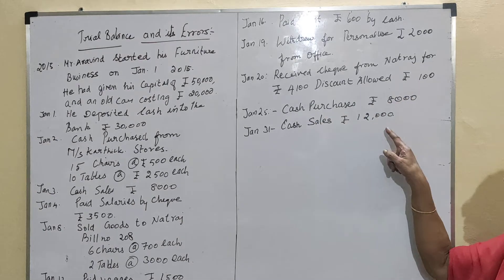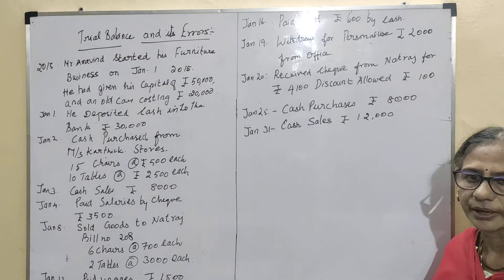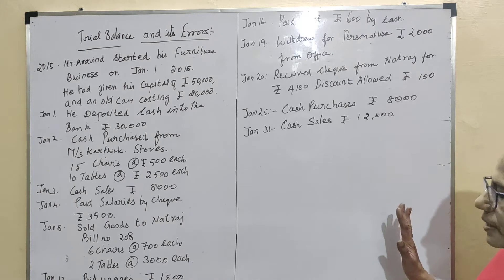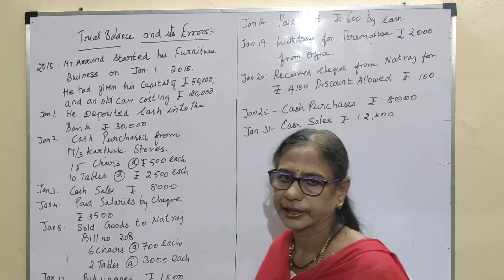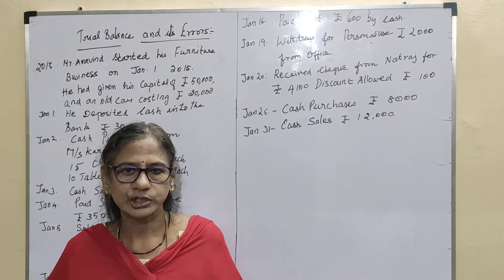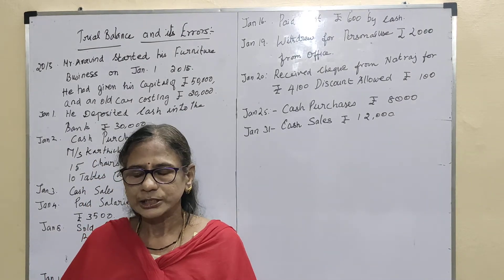Cash purchases rupees 8,000 and cash sales rupees 12,000. These are the transactions given and we have to post them into the special books.